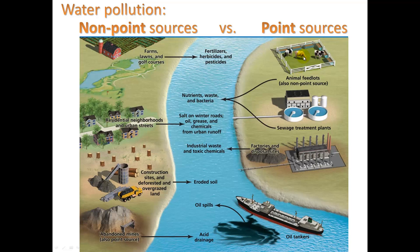Point sources come from more localized locations. An animal feedlot puts out nutrients — mostly nitrogen from animal waste and urine — and also bacteria, many of which are pathogenic, like E. coli and salmonella. Sewage treatment plants treat water first, but ultimately the sewage water goes into a river or, in our case, into the ocean, and that can be a point source of pollution. Factories can have industrial waste and toxic chemicals going into waterways. An oil tanker spill would be an example of a moving point source.